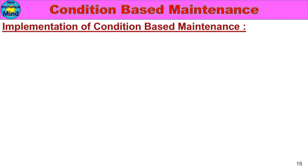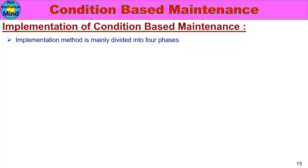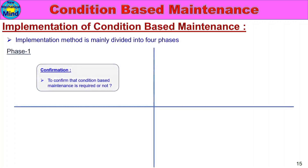Now, the implementation of Condition Based Maintenance. The implementing method is mainly divided into four phases. Phase 1 is Confirmation — to confirm whether Condition Based Maintenance is required or not. Not every machine requires it; safety-related and critical equipment should be prioritized.